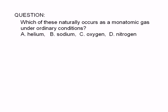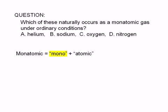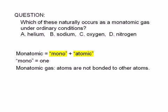Which of these naturally occurs as a monatomic gas under ordinary conditions? The term monatomic comes from the Greek prefix mono and atomic. Mono means one. A monatomic gas is just a collection of individual atoms — atoms that are not attached to other atoms.